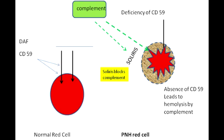When GPI anchor and DAF are impaired, they are no longer able to protect the red blood cell, so there is an increase in complement-mediated red blood cell lysis. One thing to note about PNH is that it is an acquired mutation in the hematopoietic stem cells, and the red blood cell lysis occurs intravascularly.